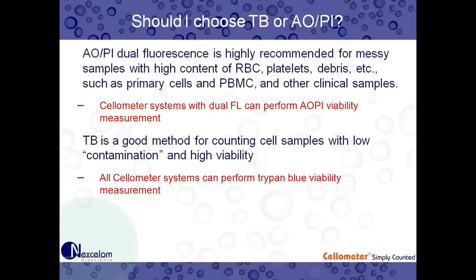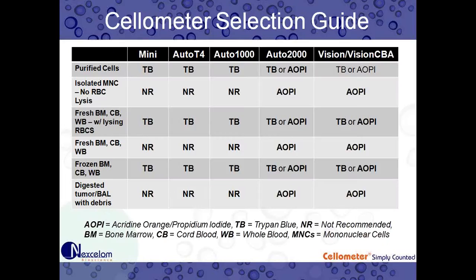All cellometer systems with dual fluorescent optics channels can perform the AOPI viability measurement. Trypan Blue — the golden standard of viability counting — is a good method for samples with low contamination and high viability. Examples of these would be cell lines, primary cultured cells, or samples where you've lysed the red blood cells. All cellometer systems can perform the Trypan Blue viability measurement.